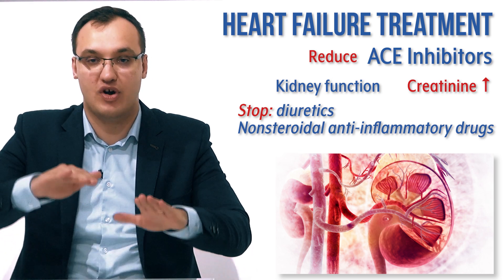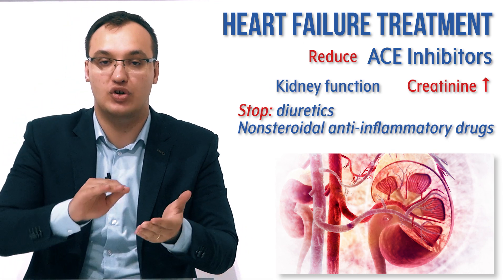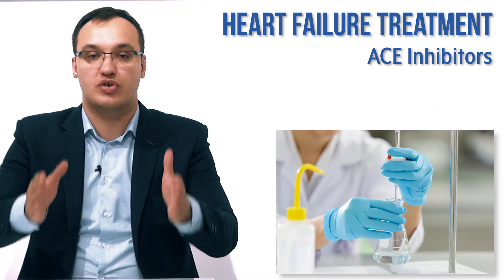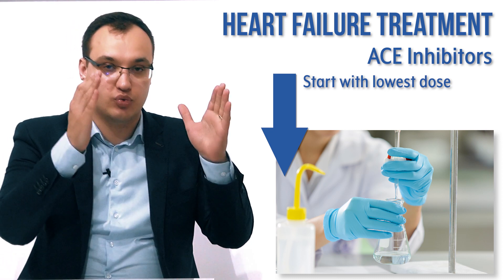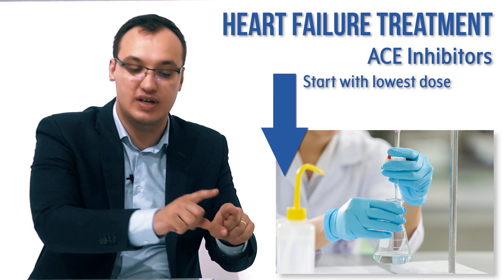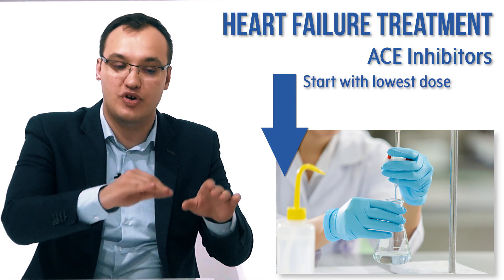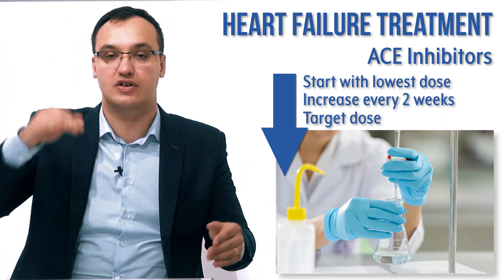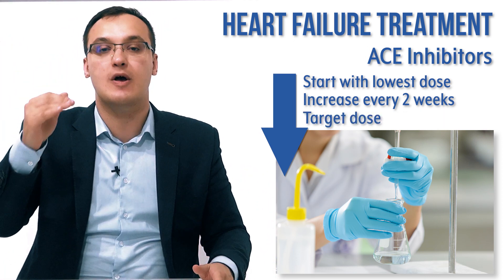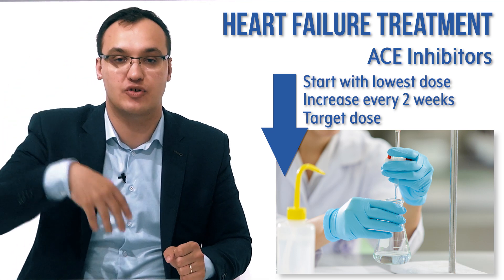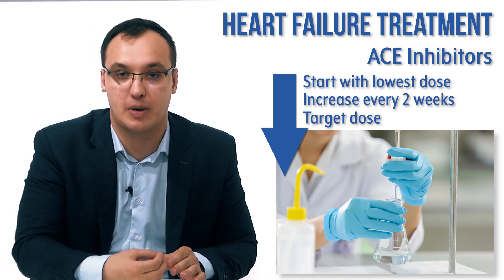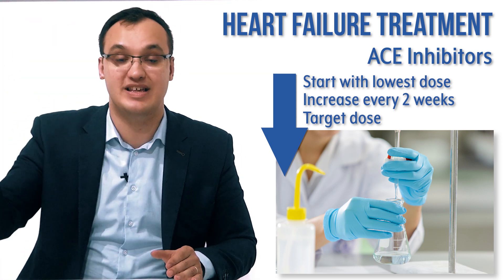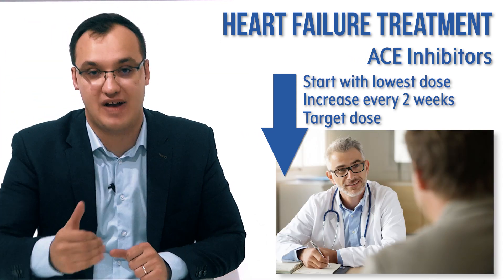When you titrate ACE inhibitors, you need to slow the titration. Always start with the lowest dose and then increase it every two weeks. Over a span of two months, you increase it to the target dose — the dose at which the patient feels better and the heart pump is functioning well. This is the target dose you continue for one year or many years, checked regularly by a family doctor.